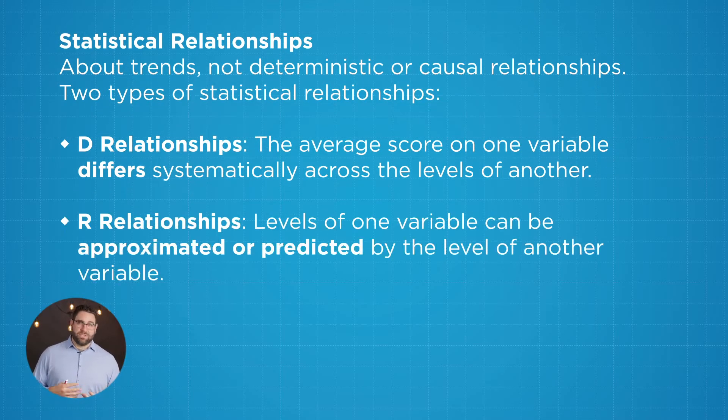When we're talking about an R-relationship, which is our other type of statistical relationship, we're talking about one variable that's going to differ across levels of another variable. So we can even predict what one variable might be based on that first number. So if I said your shoe size is X, I could be able to predict with some accuracy how tall you might be because those two things are related.